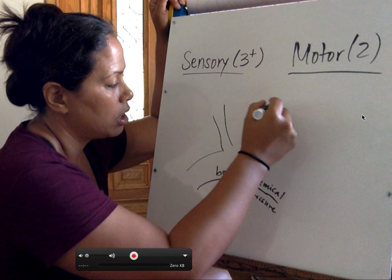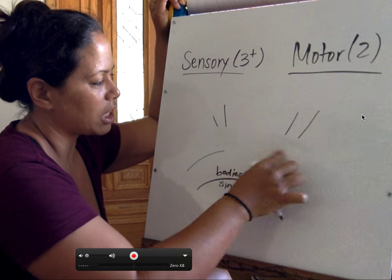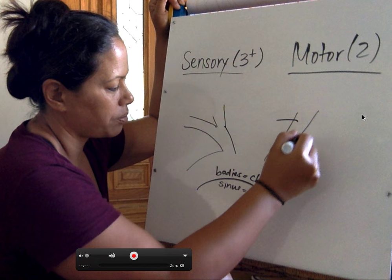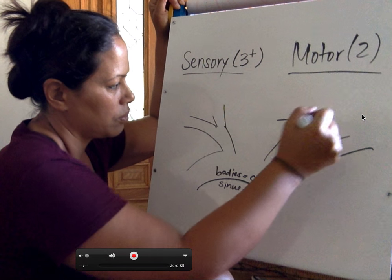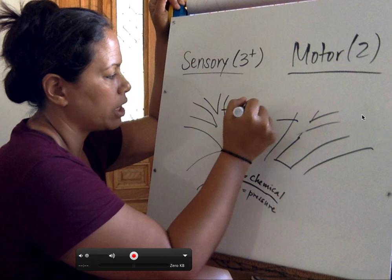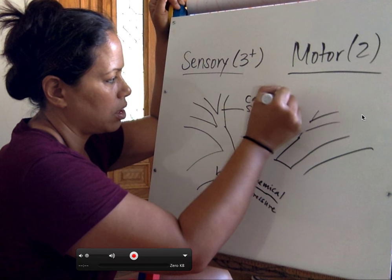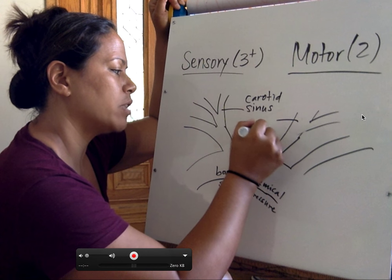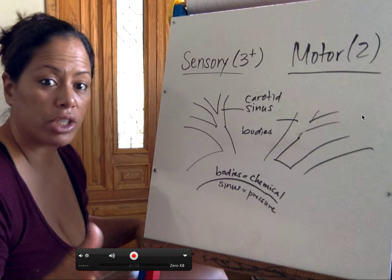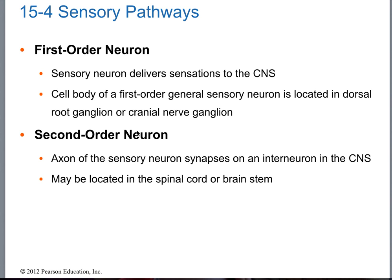There are two different types of receptors found in the blood vessels that primarily supply the brain. The aortic arch has bodies — whenever you think bodies, think chemical. Whenever you think sinus, think pressure — sinus pressure — because these are your baroreceptors for blood pressure regulation. And there are also carotid sinuses and carotid bodies.